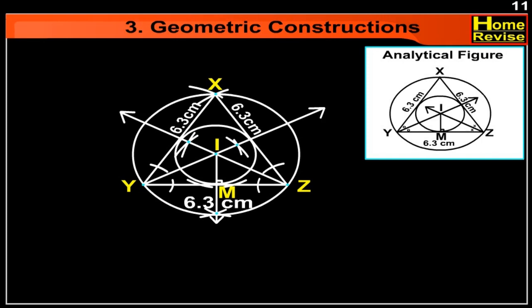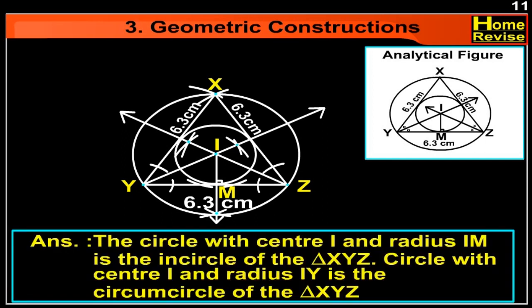The answer is: circle with center I and radius IM is the incircle of triangle XYZ, and circle with center I and radius IY is the circumcircle of triangle XYZ.